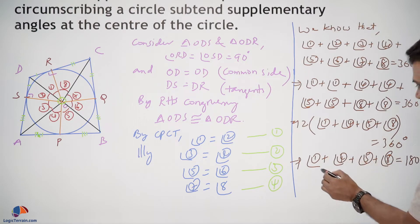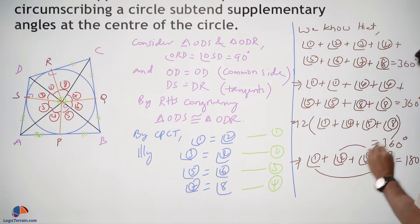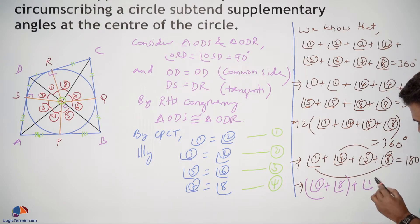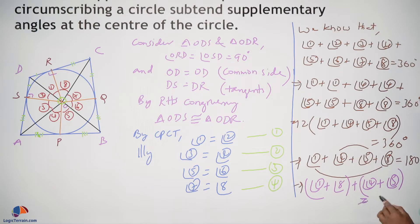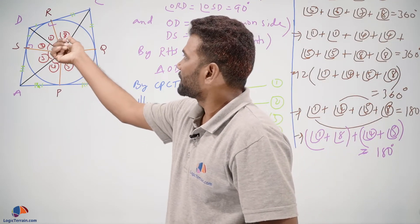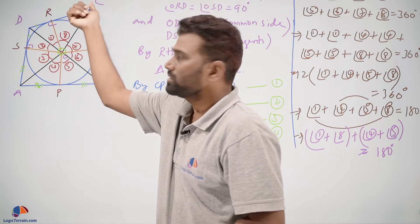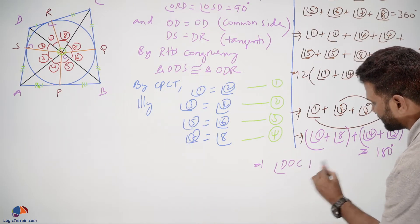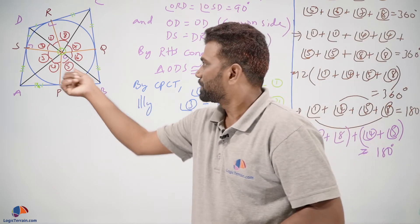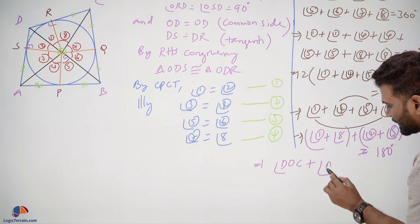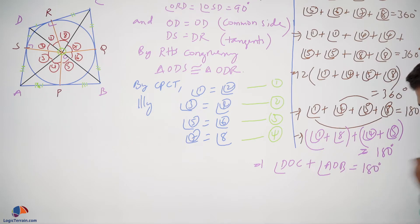Regrouping: angle 1 plus angle 8 plus angle 4 plus angle 5 equals 180 degrees. From the figure, angle 1 plus angle 8 is nothing but angle DOC, and angle 4 plus angle 5 is nothing but angle AOB. Therefore, angle DOC plus angle AOB equals 180 degrees.